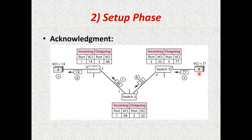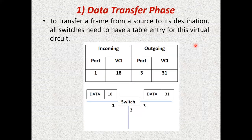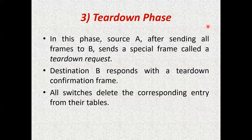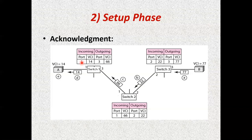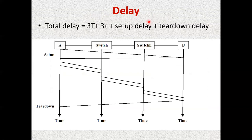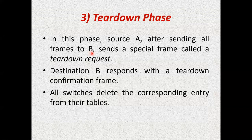Now A can send any data to B through this established path. When A sends data, it goes to switch 1, which immediately forwards it from port 1 to port 3. Switch 2 forwards it from port 1 to port 2. Switch 3 forwards it from port 2 to port 3. Data is forwarded without much processing to node B. This is the second phase — the data transfer phase. Once communication is done, a teardown request is sent from A to B, all allocated resources are released, the table entries are deleted, and the connection is terminated.